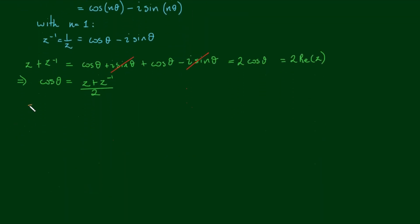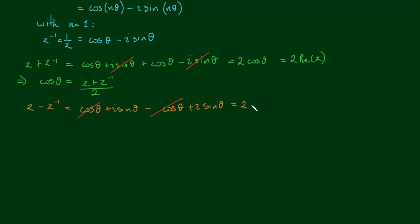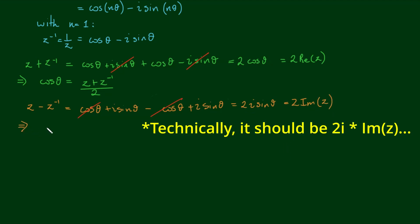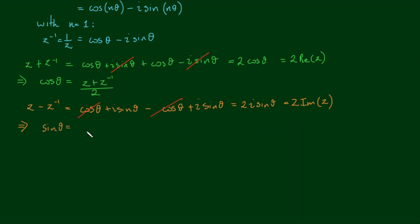By the same token, if I subtract z minus z to the negative 1, I get cosine theta plus i sine theta minus cosine theta minus i sine theta. Expanding the negative into the parentheses gives negative cosine theta plus i sine theta. The cosine terms cancel and we get 2i sine theta, or 2 times the imaginary component of z. Rearranging, sine theta equals z minus z to the negative 1 over 2i. Note these two relationships — let's call them equation 1 and equation 2 — as they will be very important when we cover Euler's formula in the future.